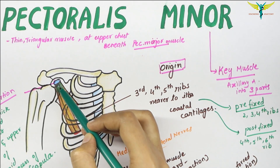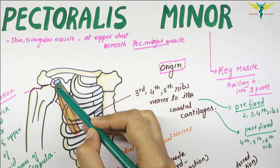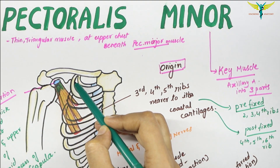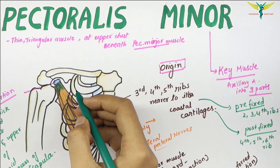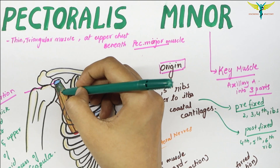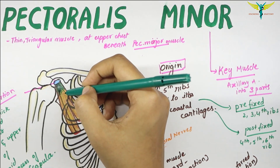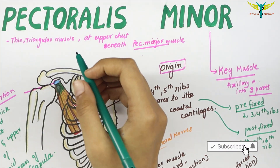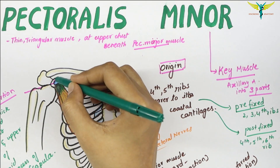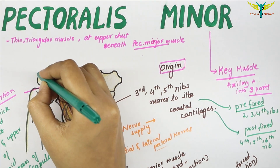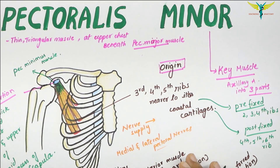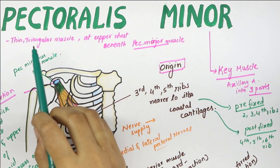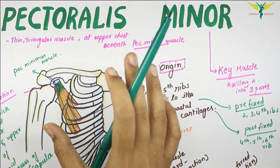Rarely, some fibers of the pectoralis minor muscle separate and pass from the first rib to the coracoid process, constituting the pectoralis minimus muscle. So sometimes the fibers of the pectoralis minor may get separated and form this distinct pectoralis minimus muscle.